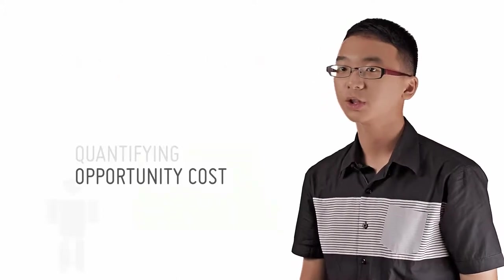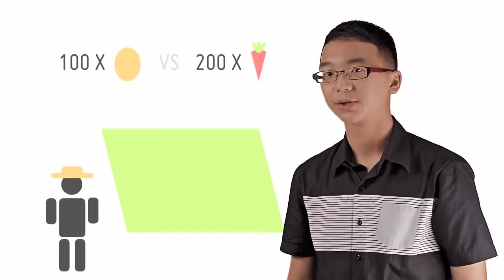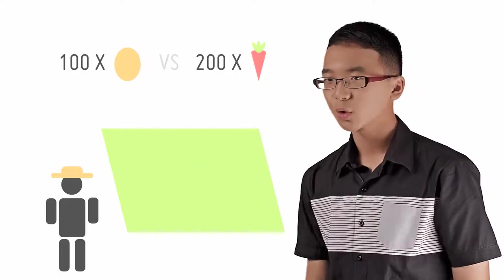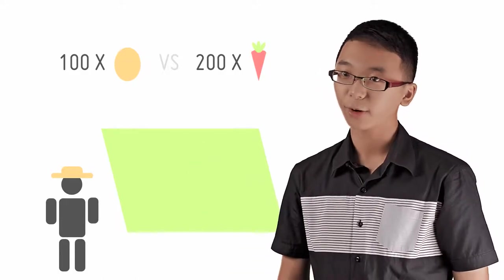So, you own a plot of land on which you can either grow 100 potatoes or 200 carrots. So what if you have a mix of both?